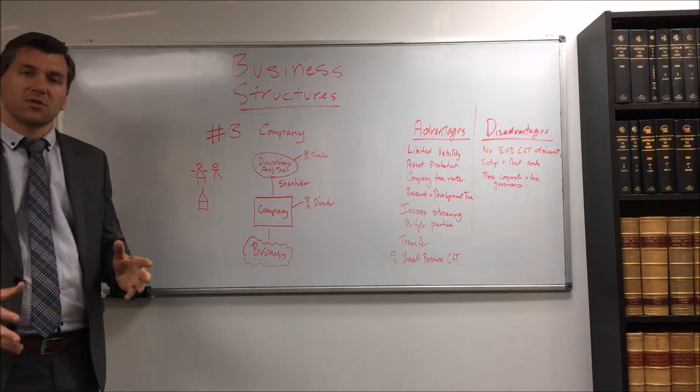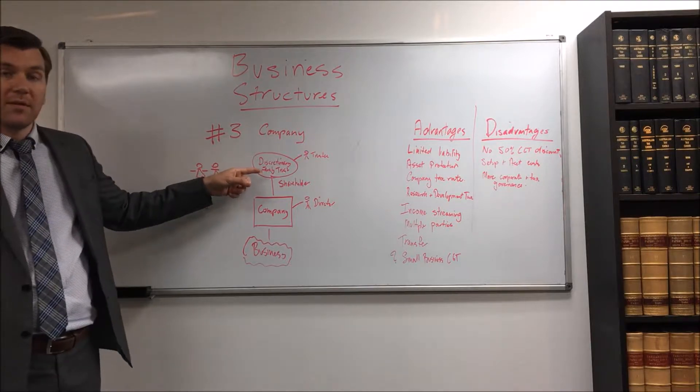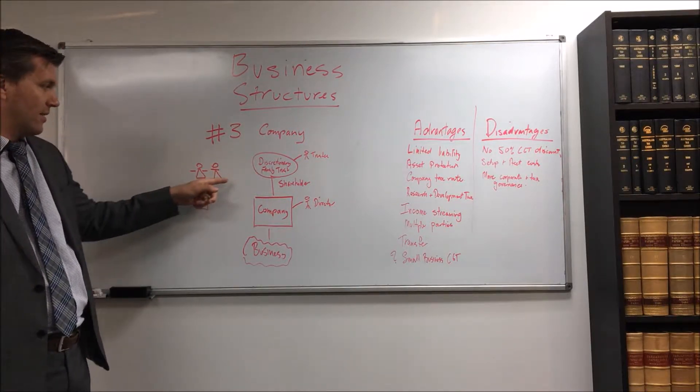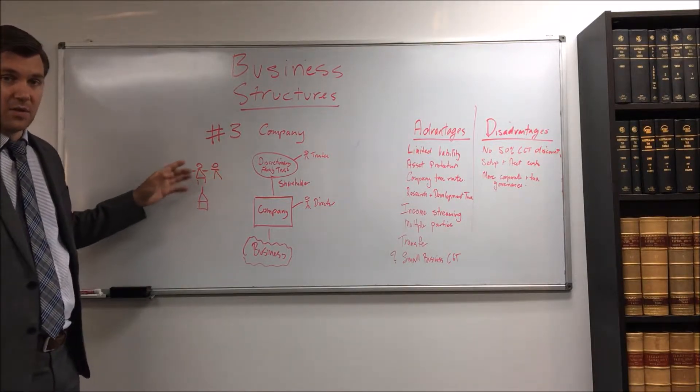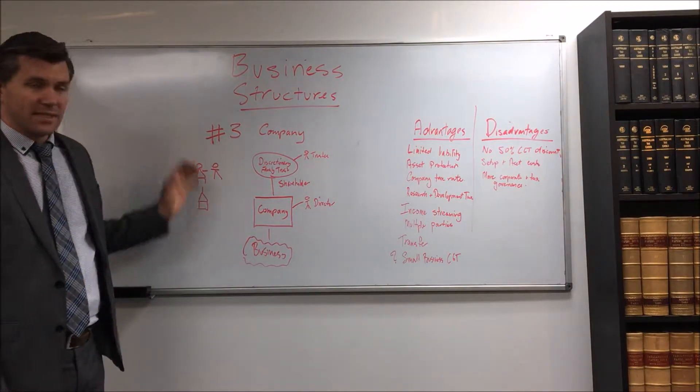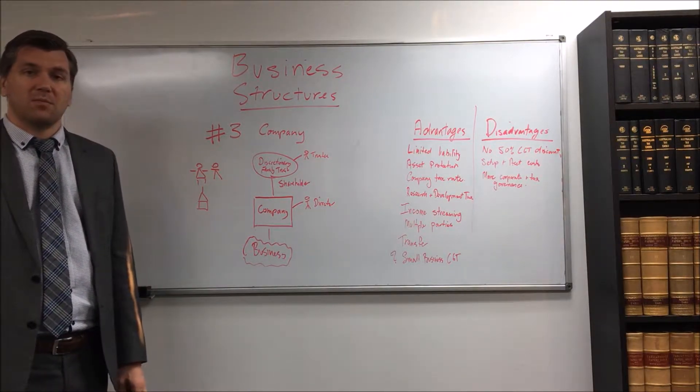Secondly you have the ability to stream and make distributions and choose where your franked dividends go out from your family trust out to the husband or the wife or you set up another company or other entities, and so you can send the income out or your accountant will send the income out in the most beneficial manner.